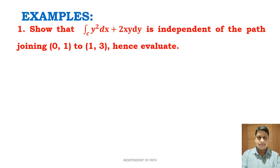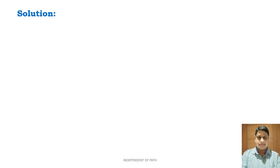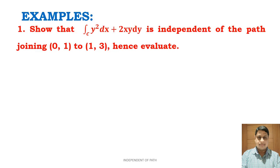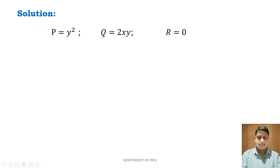Using this concept we can solve some examples. The first example: show that ∫_C y² dx + 2xy dy is independent of the path joining (0,1) to (1,3) and hence evaluate it. In solution, comparing with P dx + Q dy + R dz: P is the coefficient of dx, so P = y²; Q is the coefficient of dy, so Q = 2xy; and R = 0 since dz is absent.